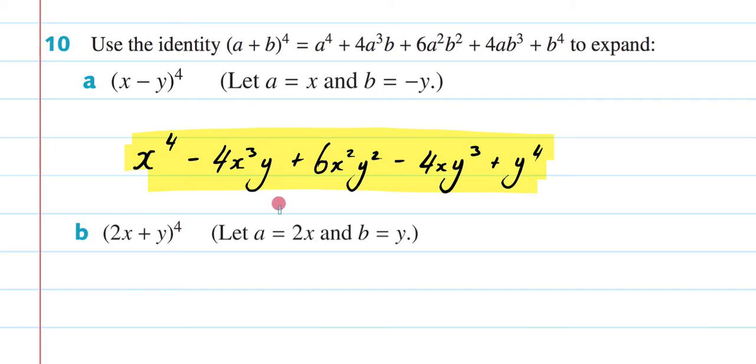So this time it's telling us, let a equal 2x. So every time I see a, I'm going to put in 2x. And every time I see b, I'm going to put y in there. So this is going to be y, y, y, y. All right, let's go.